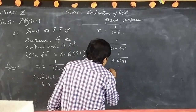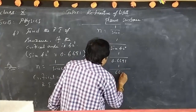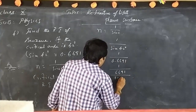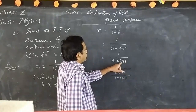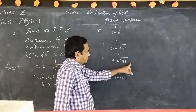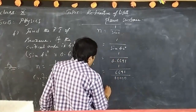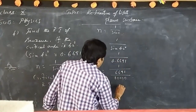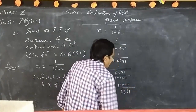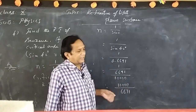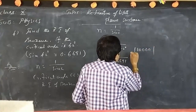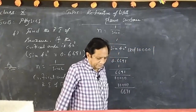To remove the decimal point, we write 1 / 0.6691 as 10,000 / 6691. Then we do the division: 10,000 divided by 6691, roughly calculating this value step by step.